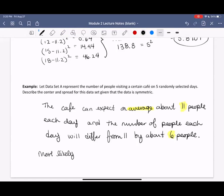Most likely, 6 less than 11 would be about 5, to 6 more than 11 would be 17 people. So we should expect somewhere between 5 and 17 people to be in the cafe. So what we just did was compute the standard deviation for this set of data using the standard deviation formula.